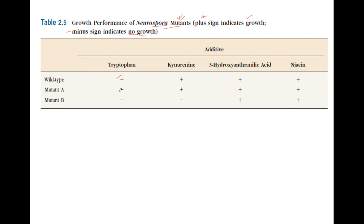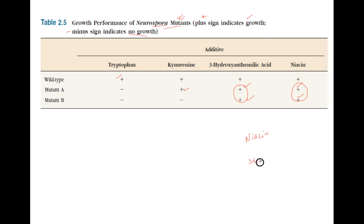Mutant A will only grow if niacin, 3-hydroxyanthranilic acid, or kynurenine is added. Mutant B will grow only if niacin or 3-hydroxyanthranilic acid is added. Since adding niacin causes both mutants to grow, niacin is the last product. Since 3-hydroxyanthranilic acid also causes both to grow, we cannot yet differentiate the order between niacin and 3-hydroxyanthranilic acid.